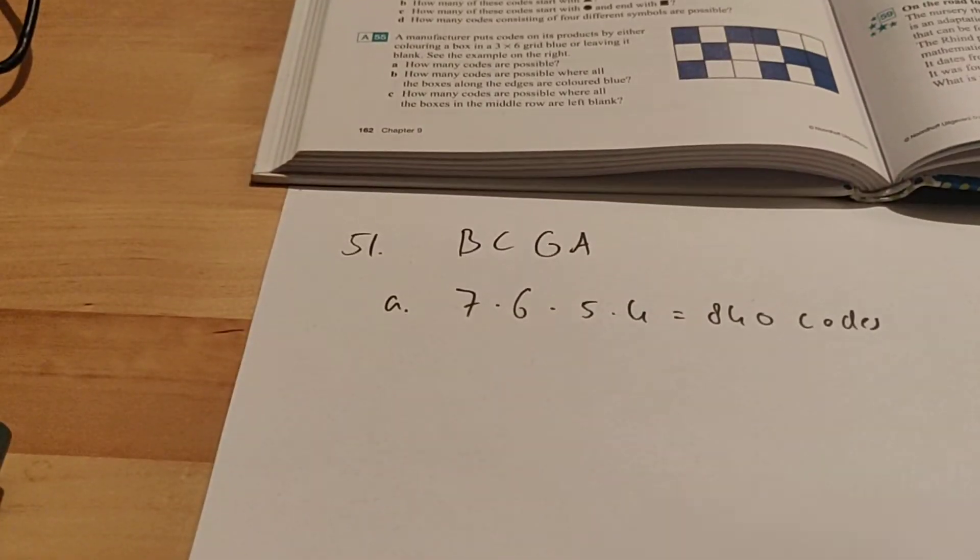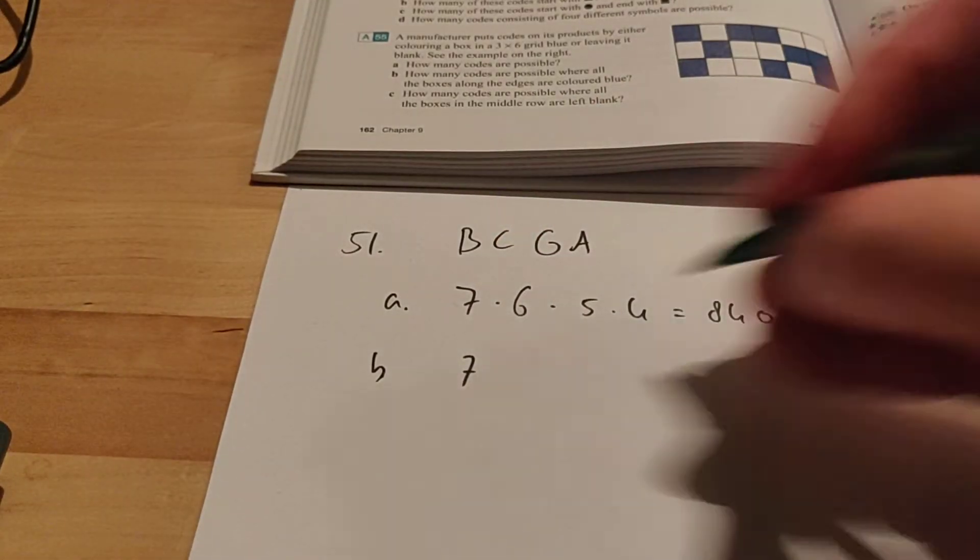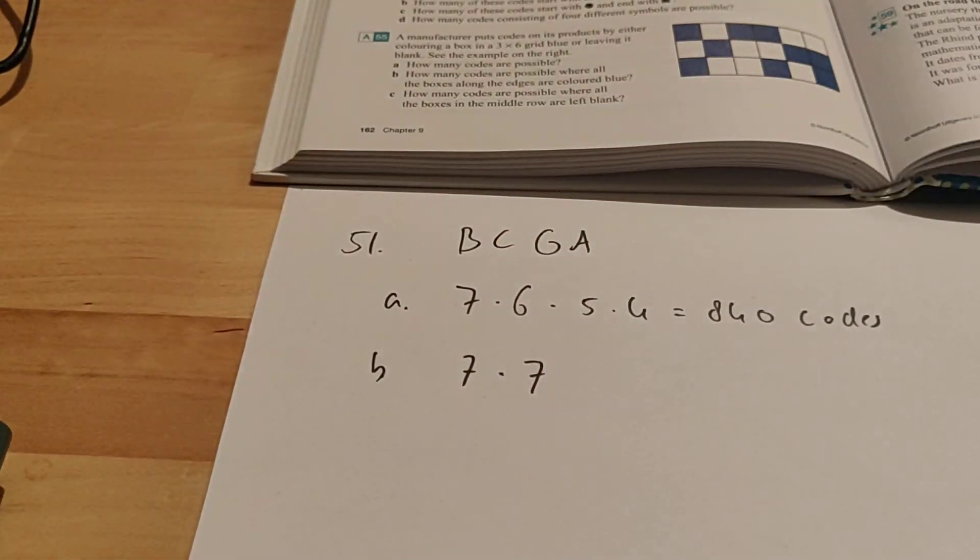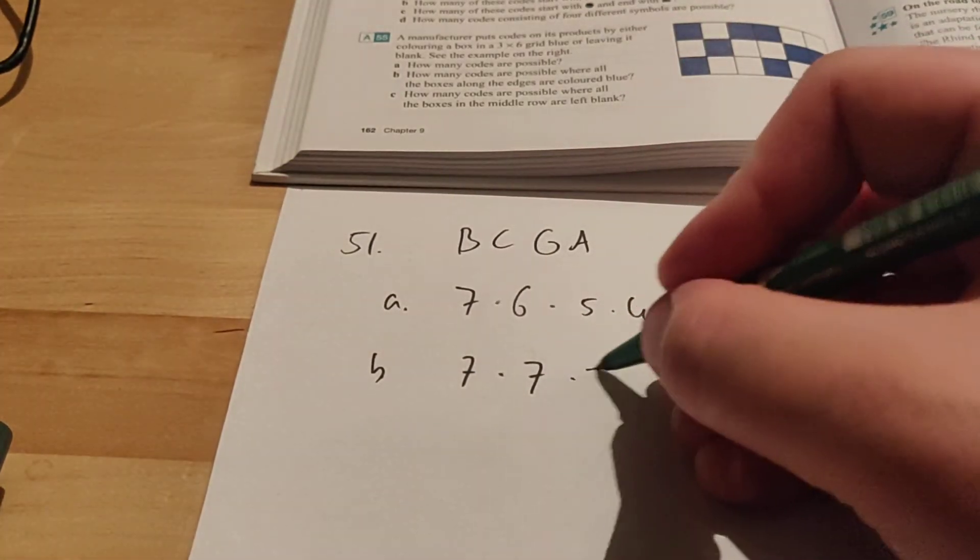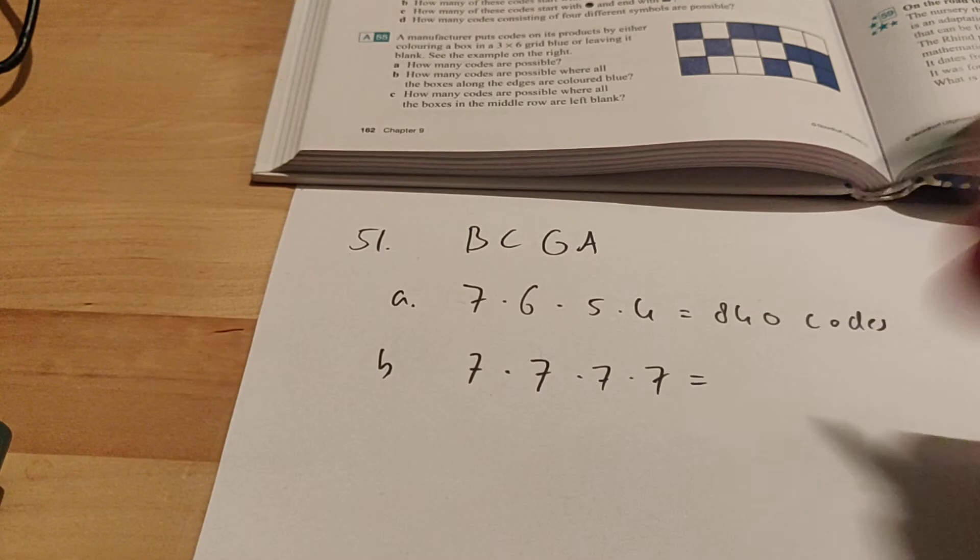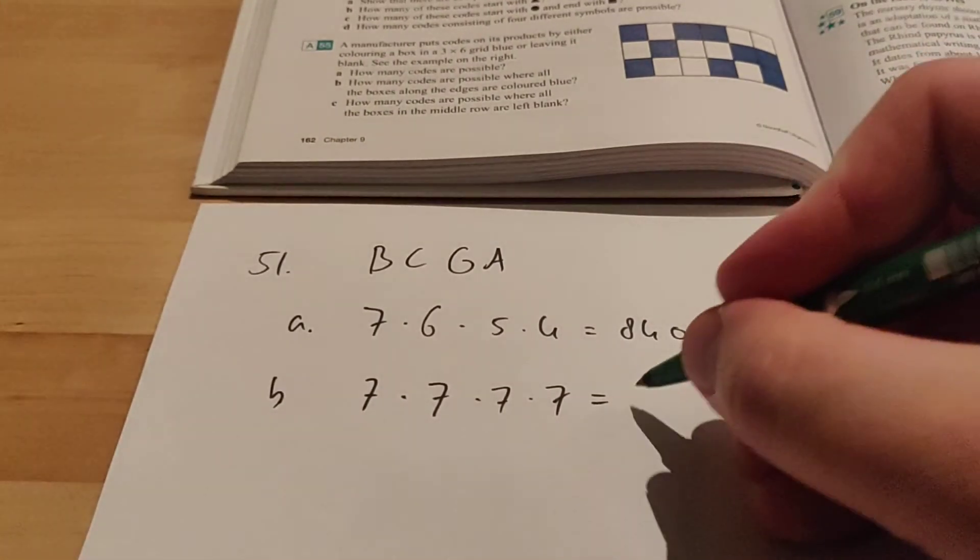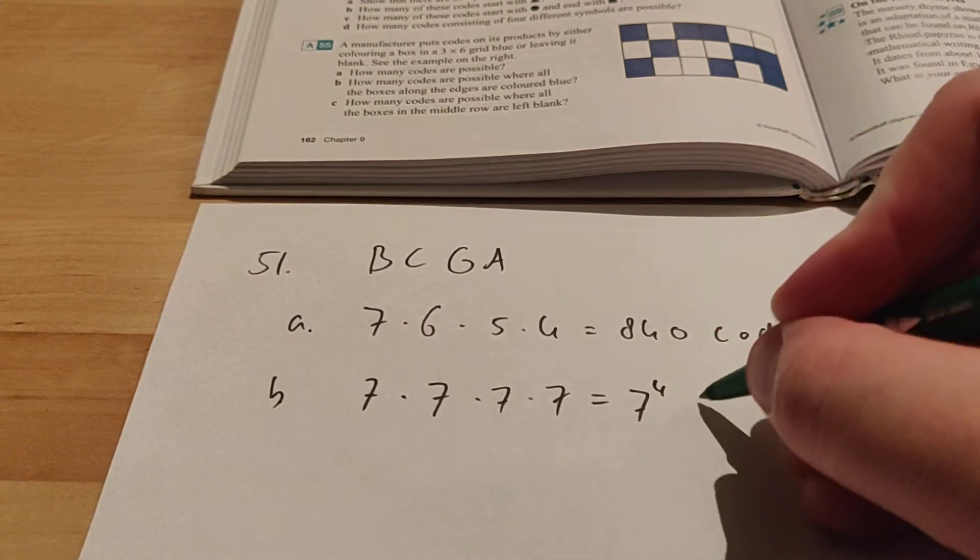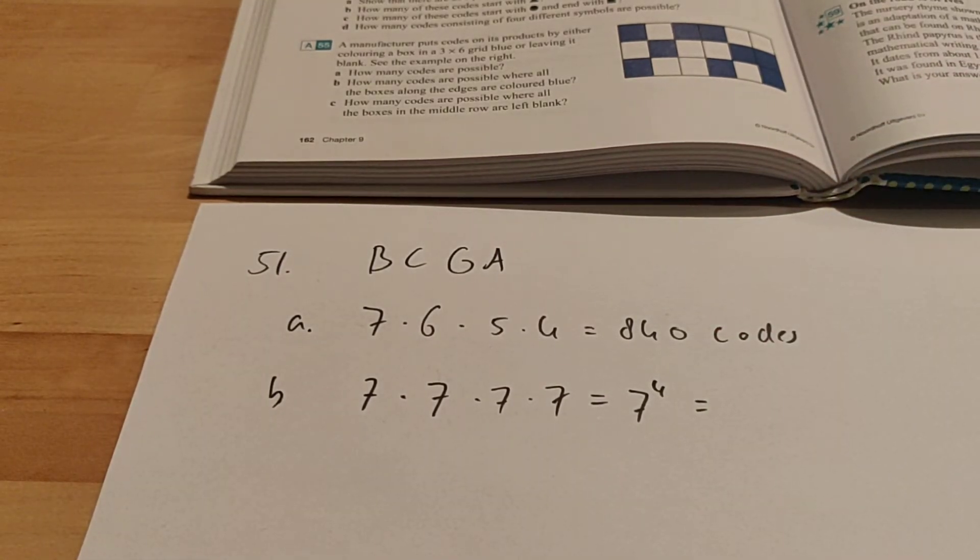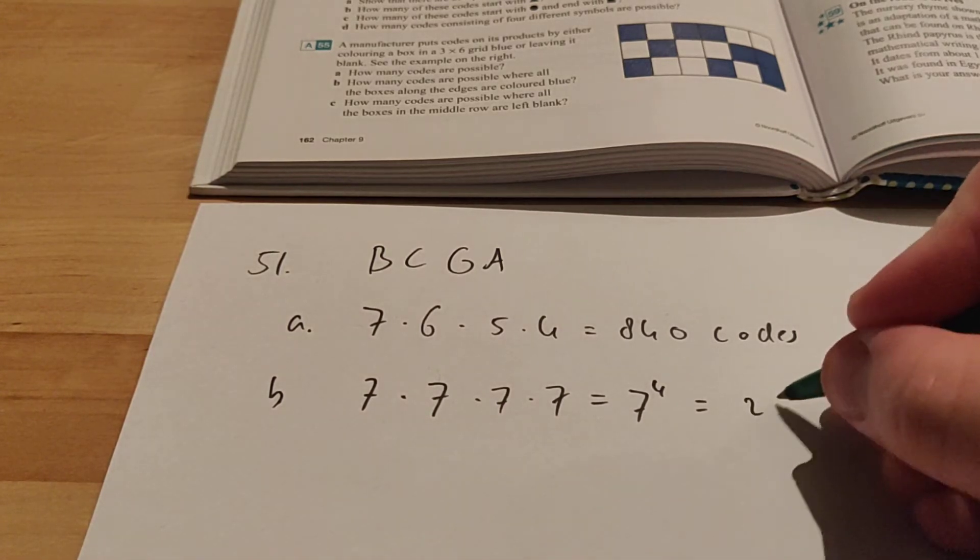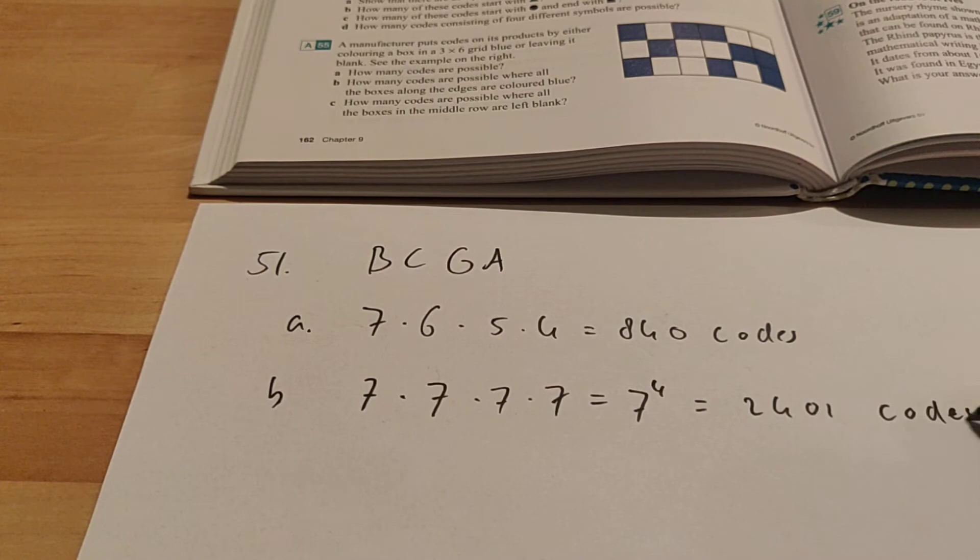So this is what we get over here. For the first letter, he has seven different letters to choose from. For the second one, also seven letters, because he can still use the one that he already used. So we have 7 times 7 times 7 times 7. If you have a bigger exercise, then sometimes it's more useful to write it down with a power, like 7 to the power of 4. This will be 2401 codes. That's how many codes he can make.